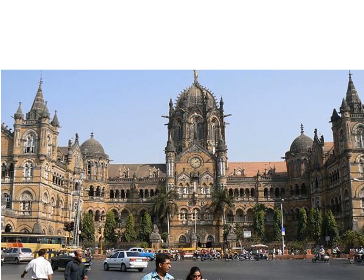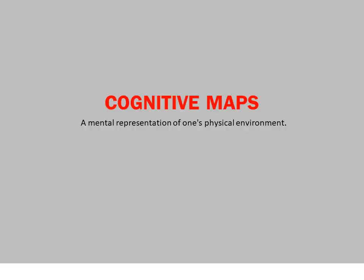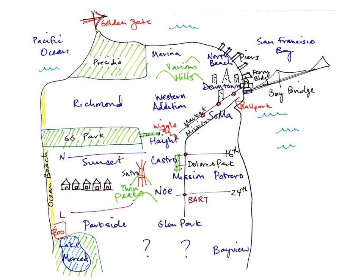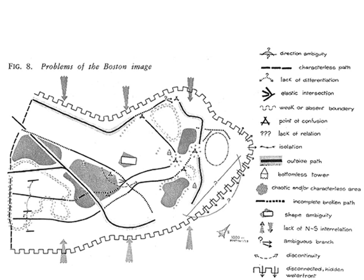When you have understood these five elements of urban form, you will be able to do cognitive mapping within your mind. What are cognitive maps? These are a mental representation of one's physical environment. Very often, to guide someone, we make sketches like this for people to understand. Similarly, these sketches are created in our minds because of places we have visited. This is a representation of Boston city where a mental map has been created on paper, showing different parts of the city to understand what problems are occurring in the city.